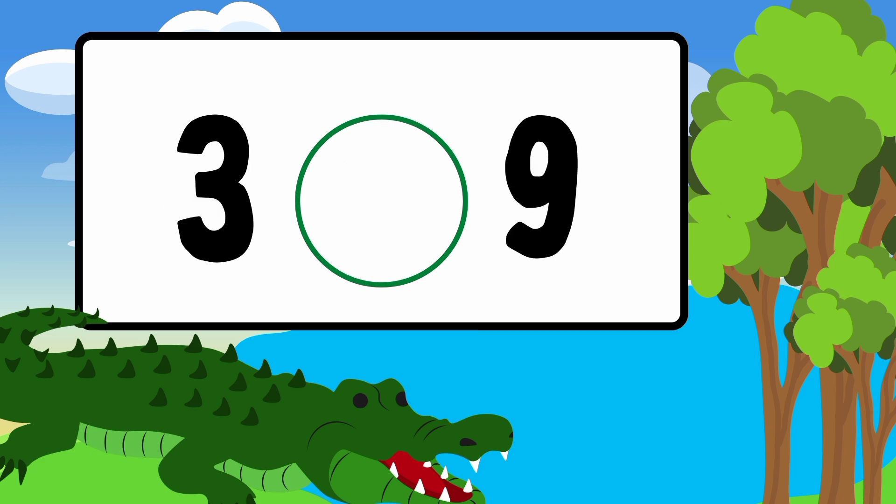Now let's compare 3 and 9. The alligator's mouth wants to eat the bigger number, so the greater than symbol will point towards 9.